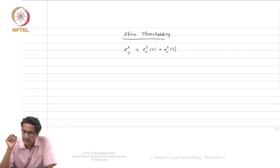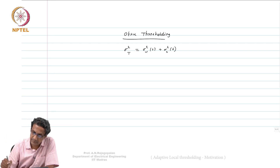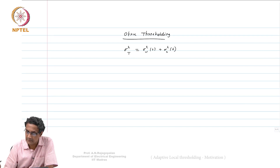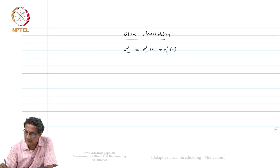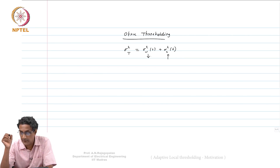We want a t that is optimal. The optimal t is the one that will either maximize the between-class variance σ²_B, or equivalently minimize the within-class variance σ²_W.